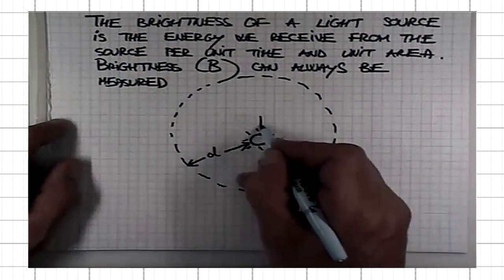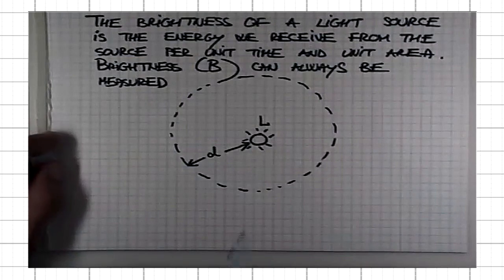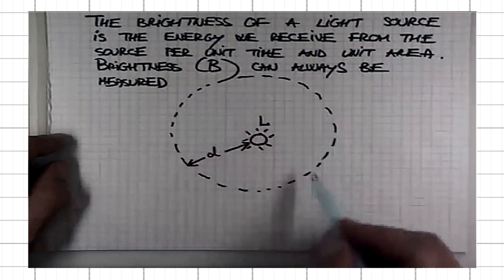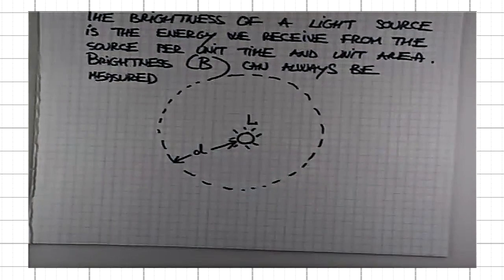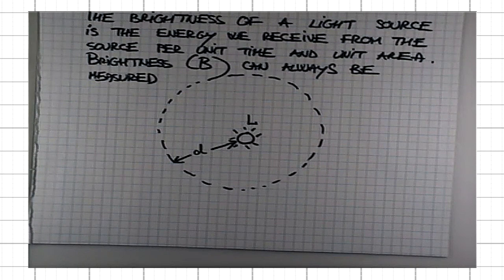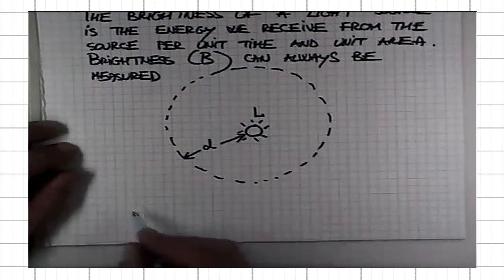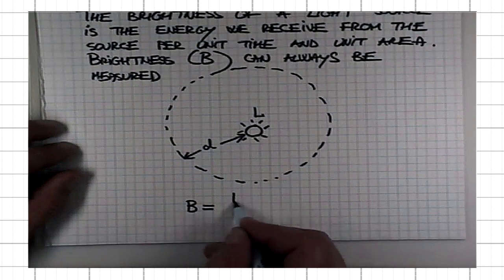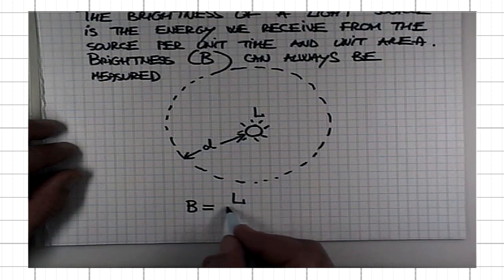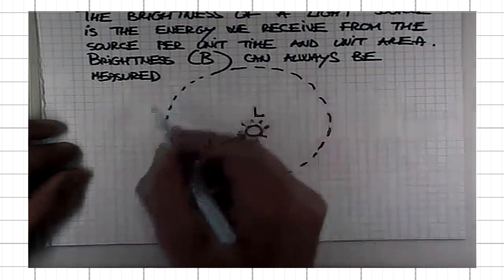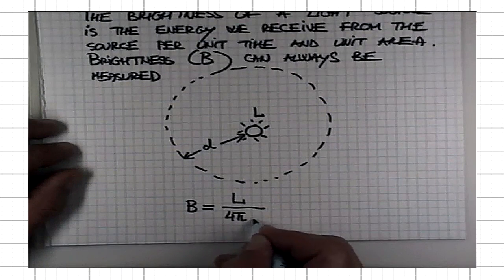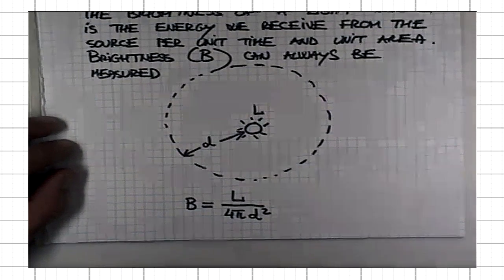It has luminosity L. All of this luminosity at a distance d will be distributed over the surface area of this sphere of radius d. The brightness is the luminosity, the amount of energy per unit time, divided by the surface area of the sphere, and the surface area of a sphere of radius d is 4πd².